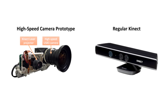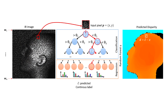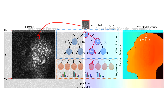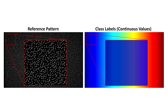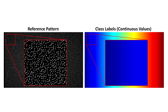Our approach reframes what is typically a stereo matching problem into a pattern recognition task, where we classify and then regress depth by simply labeling image patches in the observed image. Our algorithm allows us to solve this matching problem in spatial structured light systems efficiently and robustly without any matching.